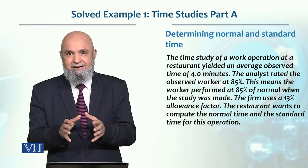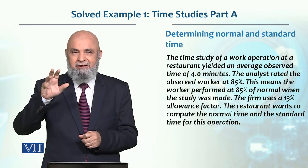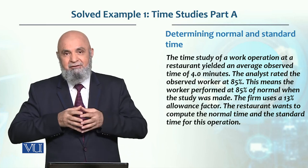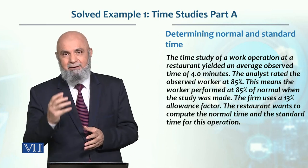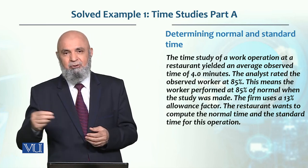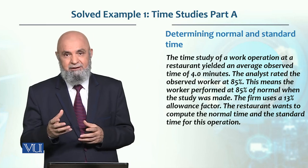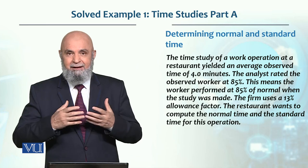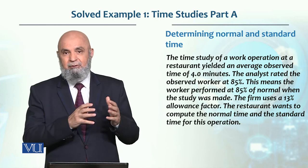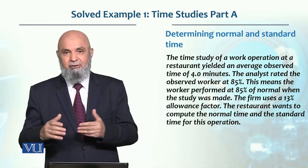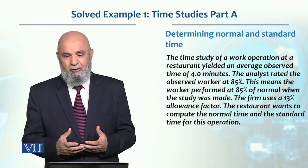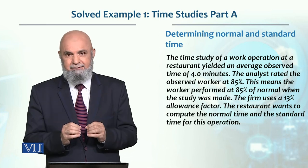मकसद यह नहीं है कि हम जो worker है उसके incentive को कम करें। मकसद यह होता है कि हम standard ठीक बनाएं so that जब हम planning कर रहे हों, staffing कर रहे हों, तो उसके अंदर कोई issue ना हो। Incentive is one thing — labor standard के basis पर हम production planning, staffing, और material की requirement determine करते हैं। इसलिए we need an accurate time standard.